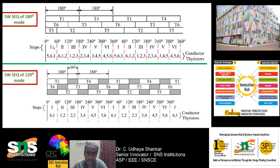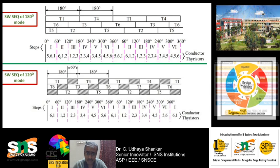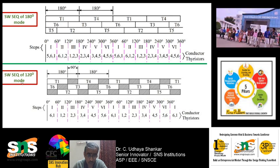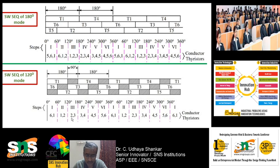In the 180-degree mode, at every interval there are three devices in conduction. For example: first interval 5-6-1, second interval 6-1-2, third interval 1-2-3, fourth interval 2-3-4, and so on. Each and every interval has three devices in conduction. Whereas in the 120-degree mode, for every interval only two devices will be in conduction — for example 6-1, 1-2, 2-3.